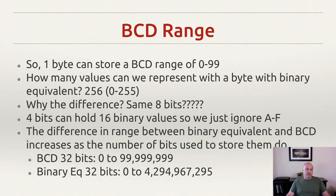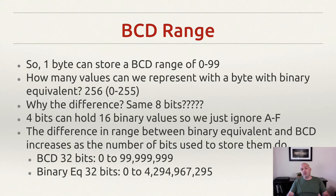Because of that, we've gone from a range of 16 values that could possibly be expressed in four bits in base two, to 10 that could be expressed in base ten. We're simply ignoring A through F — these values are essentially lost. Generally speaking, they're useless to us. When you add these differences up across more and more bits, the differences in ranges become larger and larger.